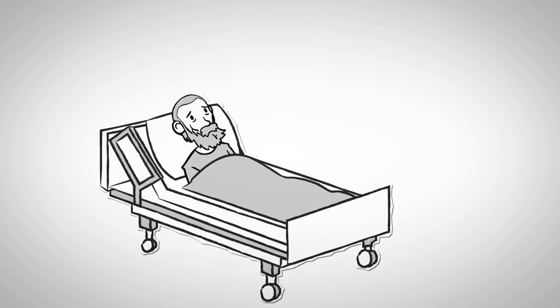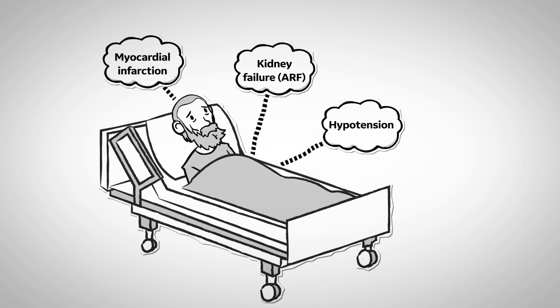So this patient comes in and is taken to the operating room for a right femoral tibial bypass. Sadly, he develops post operative complications that include a heart attack, kidney failure, low blood pressure, plus he has to have an above-the-knee amputation.